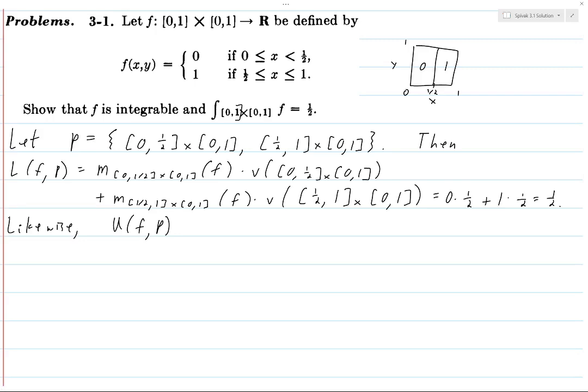But the supremum is also going to be 0 and 1 respectively, because the function only takes on one particular value on the set, and so the supremum has to be that value. So the supremum is - when we compute this, we're going to get 0 times 1/2 plus 1 times 1/2, and it will be 1/2.